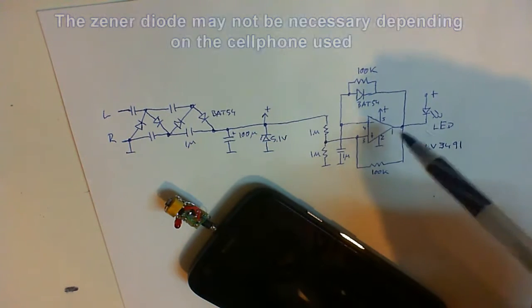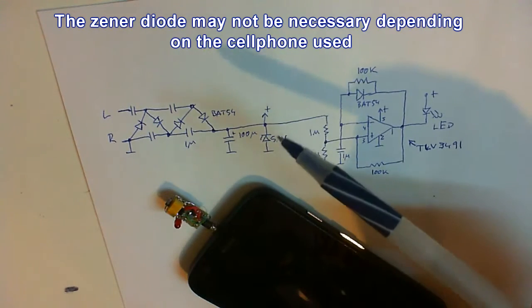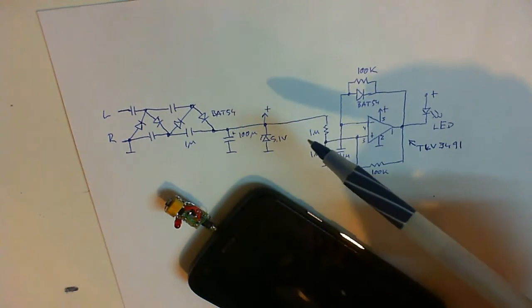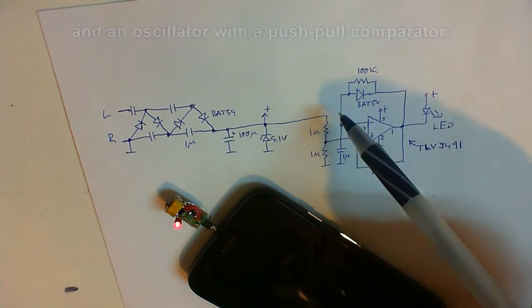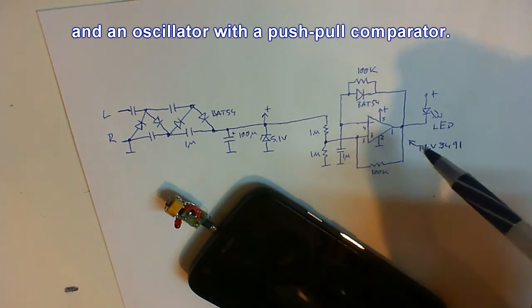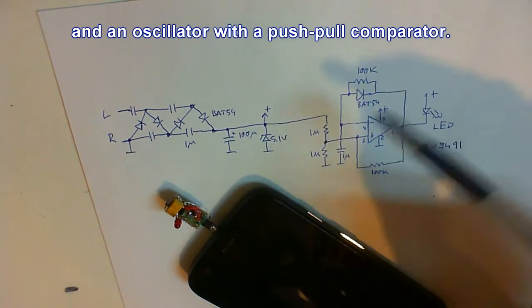The diode protects the chip because some cell phones produce higher voltage than five volts after the multiplier. The voltage then goes to the TLV 3491, a comparator with a push-pull output.